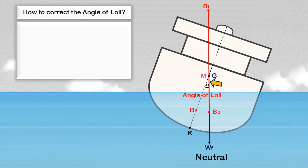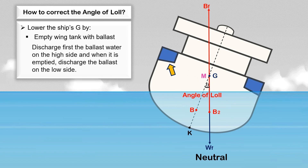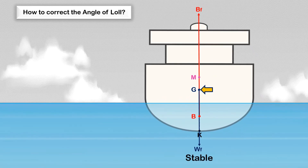How to correct the angle of loll: First, determine whether it is an angle of loll or list — if unsure, assume it is an angle of loll. Take action to reduce the ship's KG by lowering the ship's center of gravity below the metacenter. If you have a wing tank full of ballast, discharge the ballast on the high side first; when emptied, then discharge the ballast on the low side. Another way to lower the ship's G is through ballasting — select a subdivided double-bottom tank and fill it in this sequence: if divided into three compartments, start filling the tank on the low side; when full, fill the center tank; when full, fill the tank on the high side. If all tanks are completely full and the ship's center of gravity is below the metacenter, the ship will return to its upright condition.